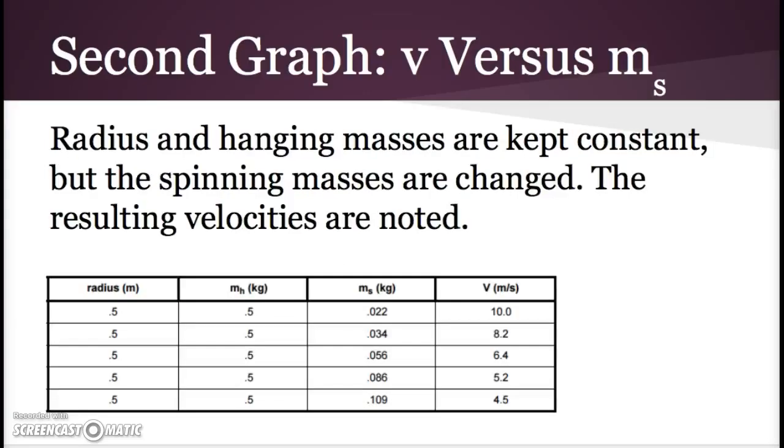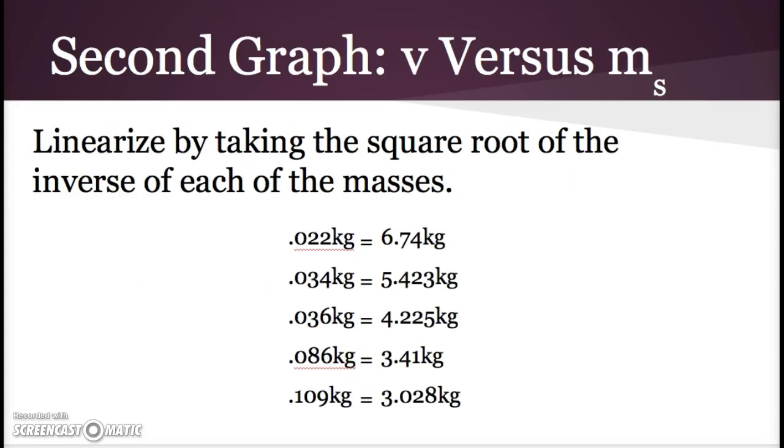The second graph is velocity versus m_s. The radius and hanging masses are kept constant, but the spinning masses are changed. The resulting velocities are noted. We linearized by taking the square root of the inverse of each mass.